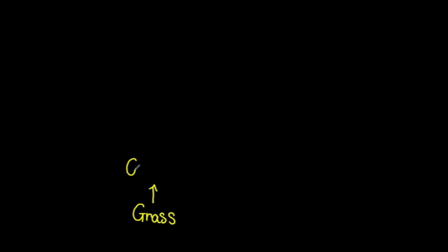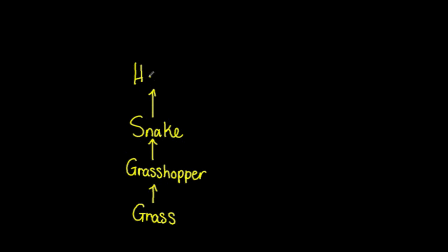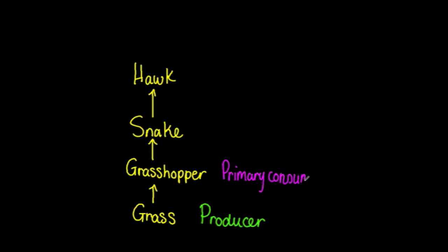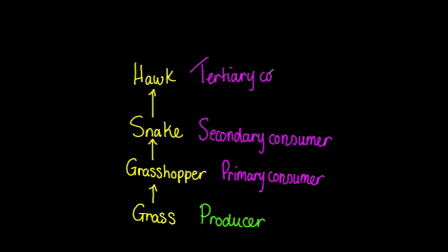An organism's trophic level refers to its position in a food chain. The first level is always occupied by the producers, the second by the primary consumers, the third by the secondary consumers, and the fourth by the tertiary consumers.